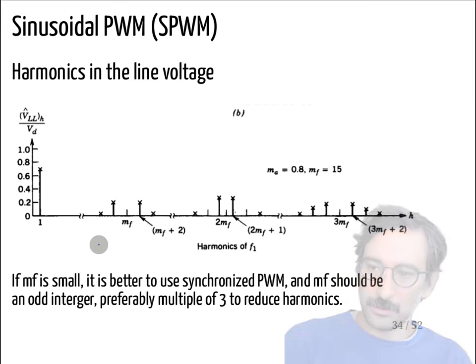If mf is small, again maybe you are limited by the transistor turn-on turn-off times or switching losses. So if you have to choose mf kind of small, it is better to use synchronous PWM. So that means the mf will be an integer. And again if you need to choose an integer, it is usually better to choose an odd integer in this case to eliminate the third order harmonics. Okay, so it should be a multiple of three to eliminate harmonics.